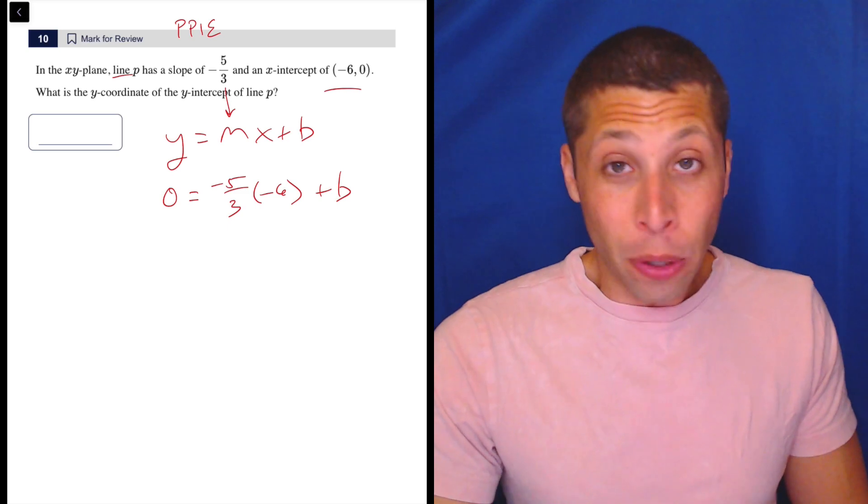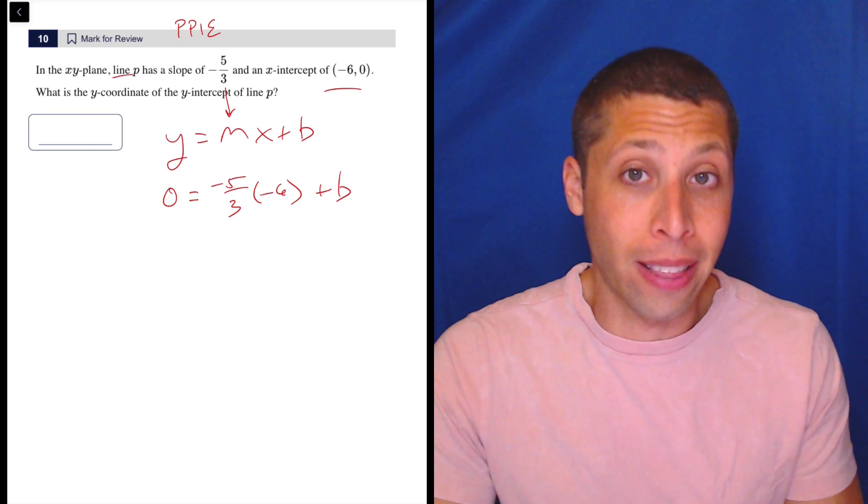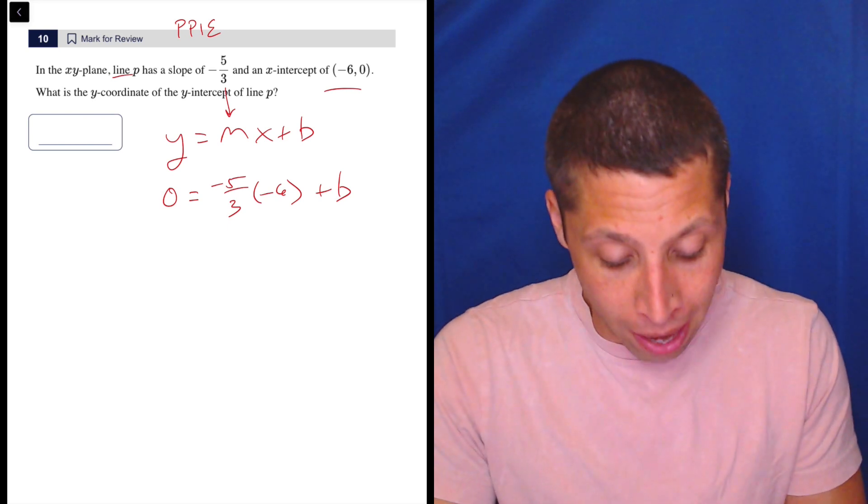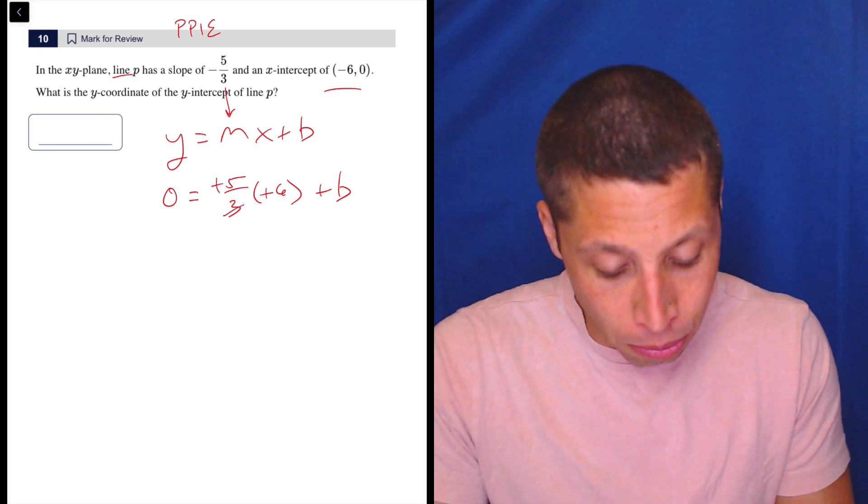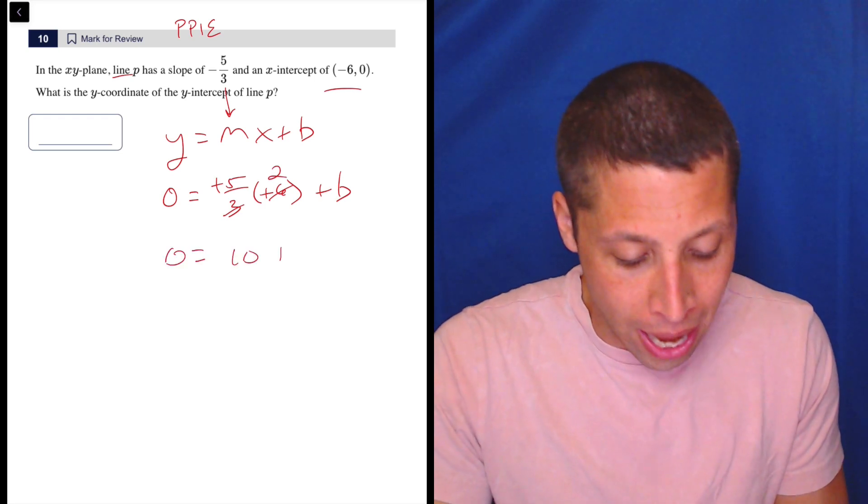So if you're bothered by the fraction, you can put that in the calculator and you should be fine. But also it's not that hard to reduce. We have the two negatives are going to cancel. The 3 is going to reduce with the 6 to a 2. So 0 equals 10 plus b.